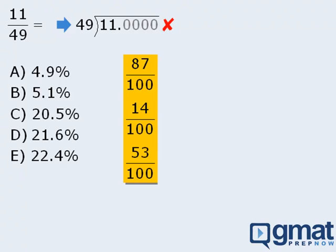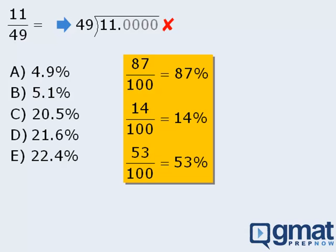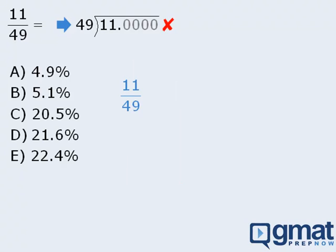First, recognize that fractions with 100 in the denominator are very easy to convert to percents. So let's see if we can take this fraction, 11 over 49, and find an equivalent fraction with 100 in the denominator.